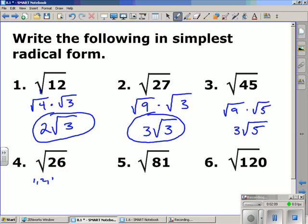The factors of 26 are 1, 2, 13, and 26. None of those numbers are perfect square numbers. Therefore, 26 is already in simplest radical form.